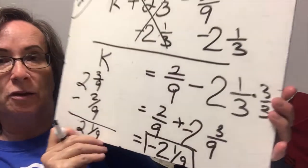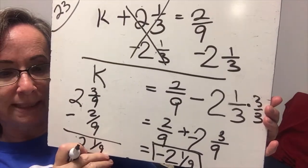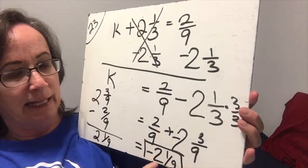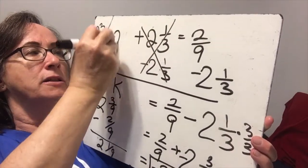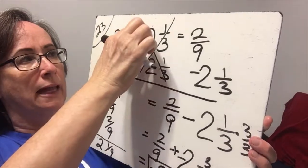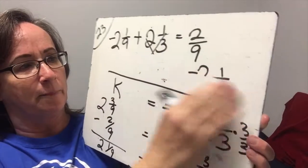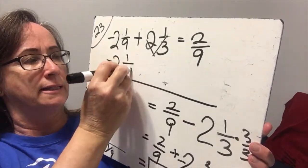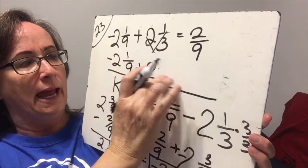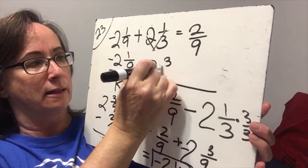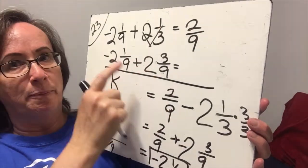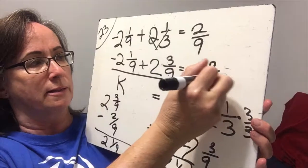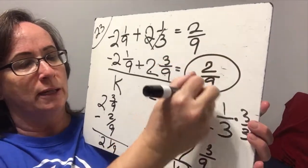Let's go back and check. If I plug in negative 2 and 1 ninth plus 2 and 1 third, does that equal 2 ninths? Negative 2 and 1 ninth is still in good form, and I'll change 2 and 1 third to 2 and 3 ninths. When I add opposite signs I subtract — so 3 ninths take away 1 ninth is 2 ninths, and 2 take away 2 is 0. So I do get the correct answer.